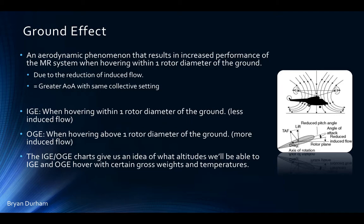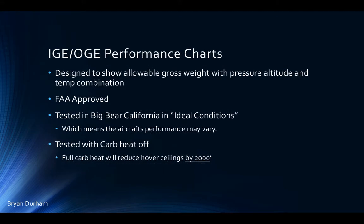The entire point of your IGE and OGE charts is to give you the altitudes, temperatures, or weights at which you would be able to perform either an in-ground effect or out-of-ground effect hover depending on different variables. These charts are designed to show the allowable gross weight with pressure altitude and temperature combination — required by the FAA for every manufacturer, so it's universal across aircraft like the A-Star or Bell 206.